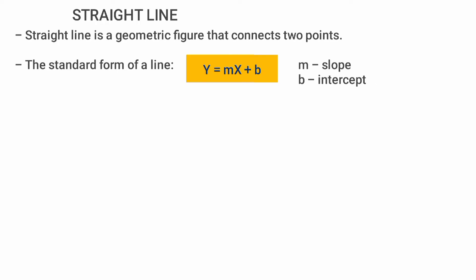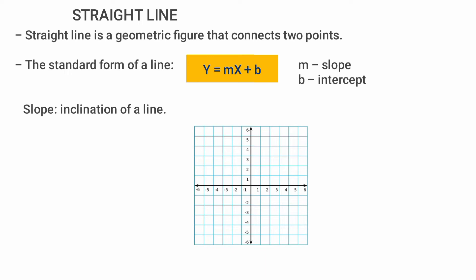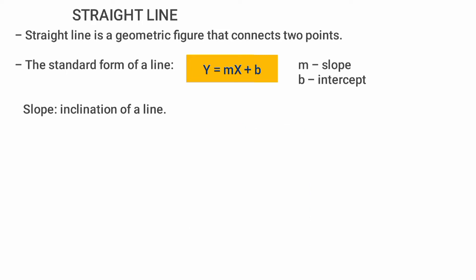Y is equal to Mx plus B. This is an interceptor — this point is the slope. This is the inclination of a line. This feature gives you the angle of the line, so this is the slope. M is the slope, and the slope is (Y2 minus Y1) over (X2 minus X1).